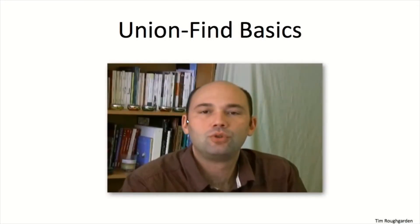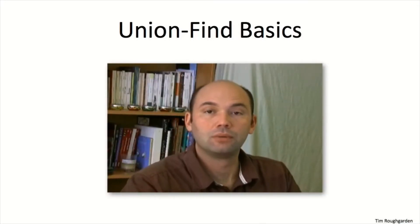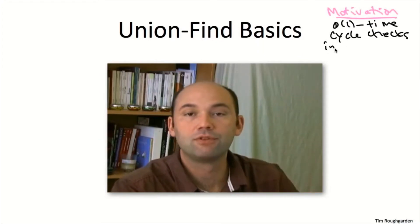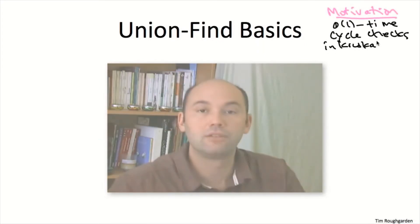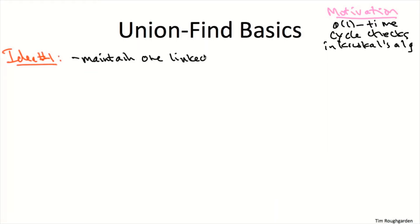Let me now introduce you to the union-find data structure. Let's not lose sight of our goal: we need to be able to check for cycles in Kruskal's algorithm in constant time. The first and most basic idea behind this union-find data structure implementation is we're going to maintain a linked structure for each group — that is, for each connected component with respect to the edges Kruskal has chosen thus far.